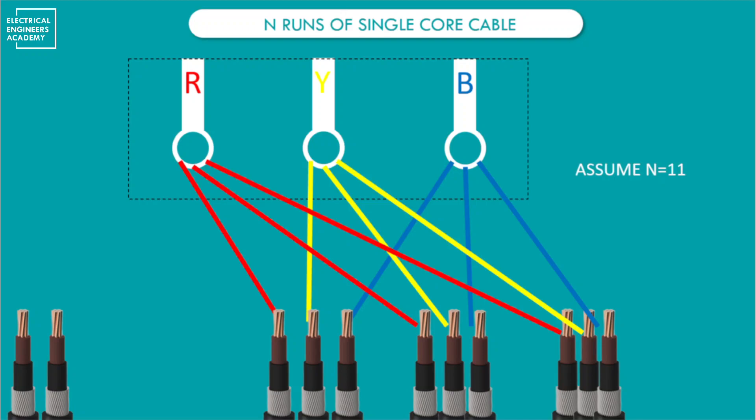To summarize: you substitute n with the number of current-carrying conductors connected to each terminal — not the total number of cables connecting your load. For example, if I have six single-core cables and the current is divided equally across terminals, I assign two cables per terminal, so n equals two. This applies for any number of cables, whether single-core or multi-core.